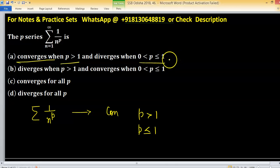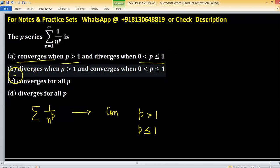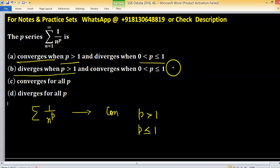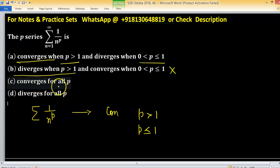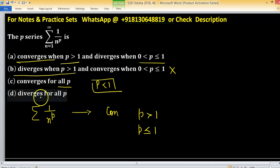This is true. Option B is wrong because it states divergent for p greater than 1. Option C, converges for all values of p, is wrong because when p is less than 1, it's divergent. Option D, diverges for all p, is also false. So the answer for this problem is option A. Thank you.